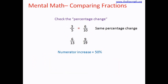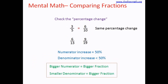Now let's look at the denominators. The first denominator is 13. If 13 increases by 50 percent, half of 13 is 6.5, so 13 plus 6.5 gives 19.5. So if the denominator increased by 50 percent, the second denominator would be 19.5. But in this case it is 19, meaning the increase in the denominator is less than 50 percent. The increase in the numerator is exactly 50 percent, while the increase in the denominator is less than 50 percent. Since a smaller denominator makes a bigger fraction, the second fraction is bigger — that means 9 over 19 is bigger than 6 over 13.